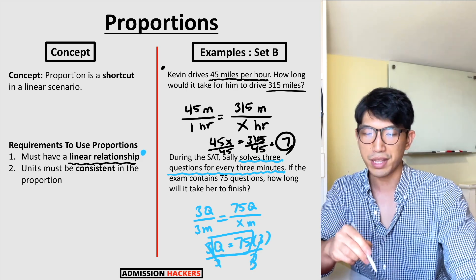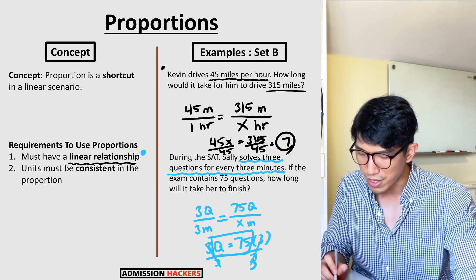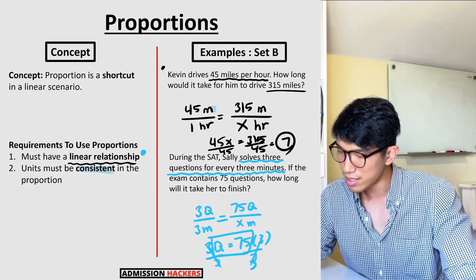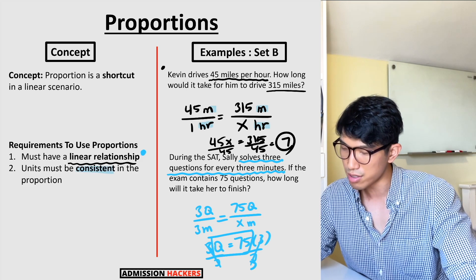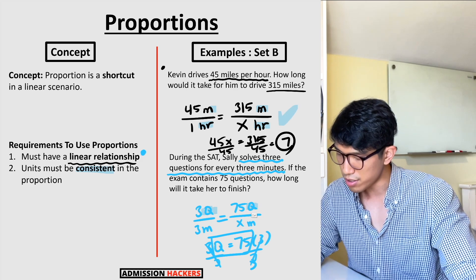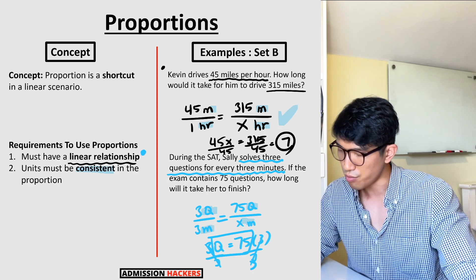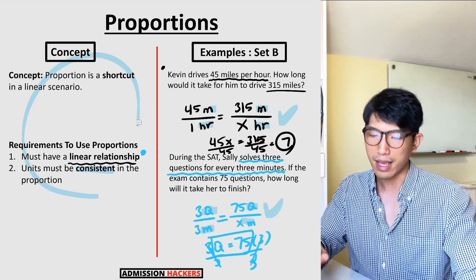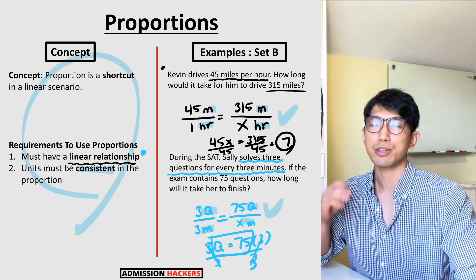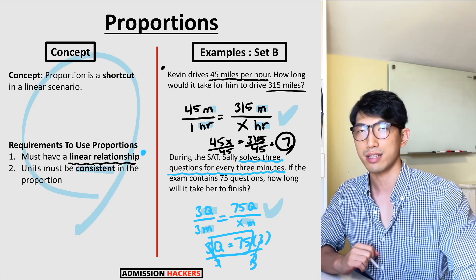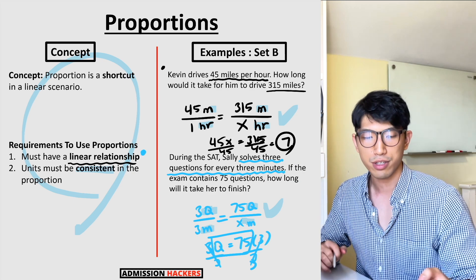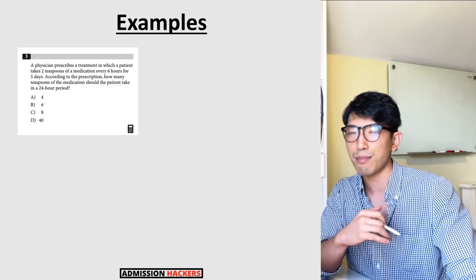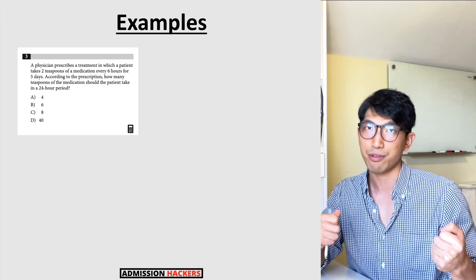To verify, check that units are consistent: questions over questions and minutes over minutes — we're good. As long as you understand the linear relationship, consistent units, and cross-multiplication, this is a simple process. Let's move on to some practice questions. We'll start with an easy example, then try medium and hard.